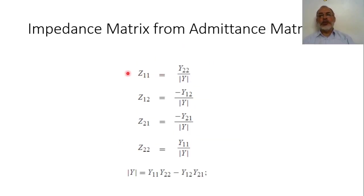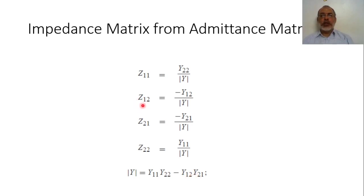If you are interested in obtaining the impedance matrix from the admittance matrix: Z11 equals Y22 over the determinant of Y, where det(Y) = Y11·Y22 − Y12·Y21. Z12 equals −Y12 over det(Y). Z21 equals −Y21 over det(Y). And finally, Z22 equals Y11 over det(Y).